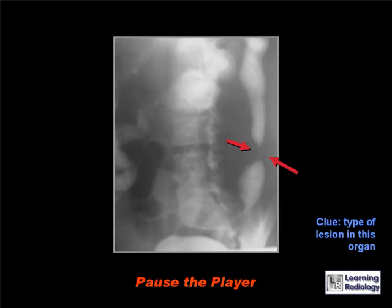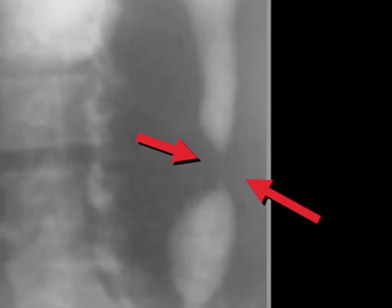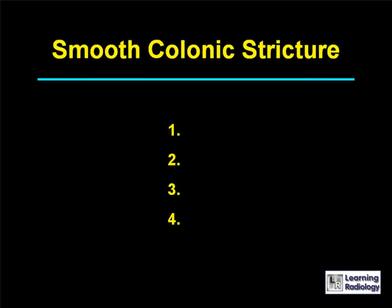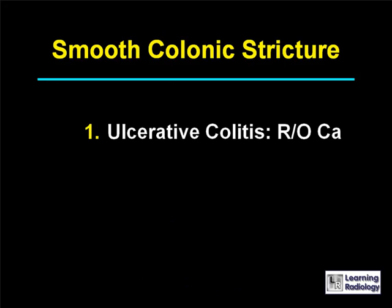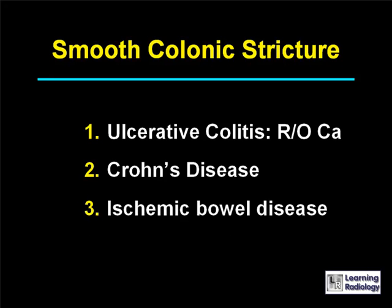The differential is for a smooth colonic stricture. There are four causes: ulcerative colitis, especially with a carcinoma of the colon; Crohn's disease; ischemic bowel disease; and radiation colitis.